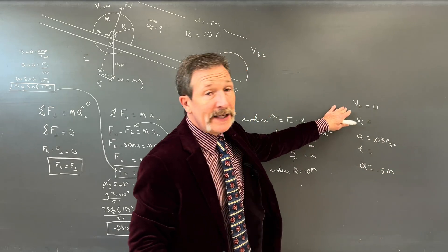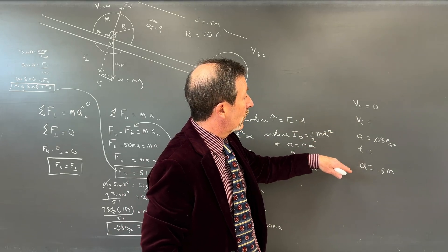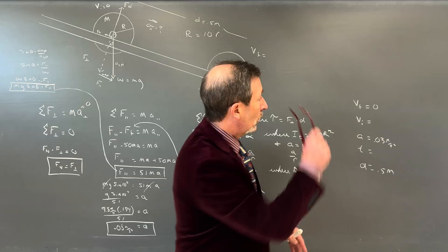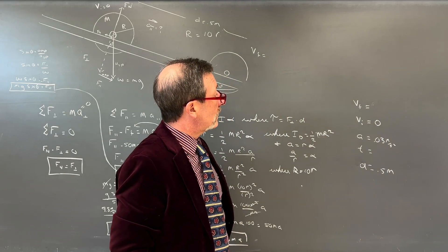Now that we've got the acceleration, we also know the velocity initial would be 0. We could solve for the velocity down at the bottom. Again, we already used energy. We found it would be, I don't know, roughly about 0.2 meters per second.